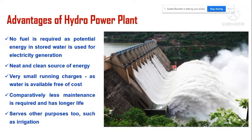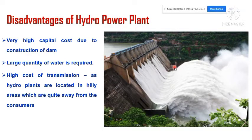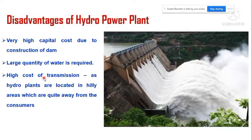Coming to the disadvantages of this hydropower plant: we need a high capital cost for the construction of the dam, we need a very large space for the storage of water, and a large quantity of water is required in order to generate a large amount of electrical energy.